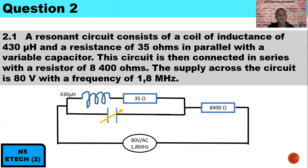Looking at question 2.1, I've drawn the circuit diagram below. A resonance circuit consists of a coil with inductance of 430 micro-Henry and resistance of 35 ohms, connected in parallel with a variable capacitor. This combination is then connected in series with a resistor of 8400 ohms. The supply across the circuit is 80 volts at a frequency of 1.8 megahertz.